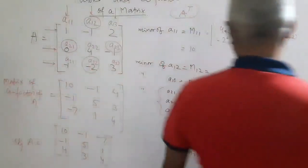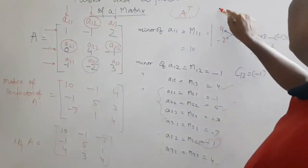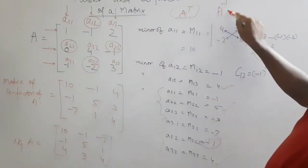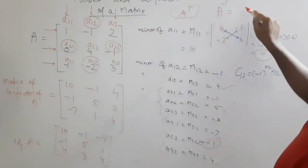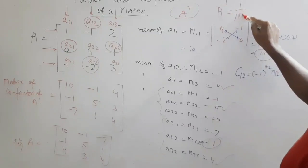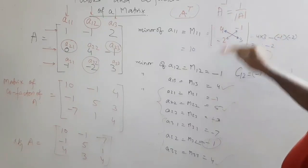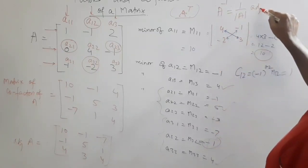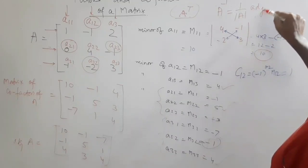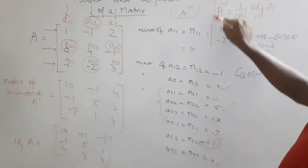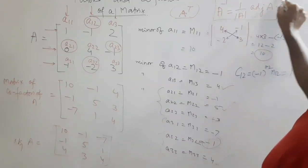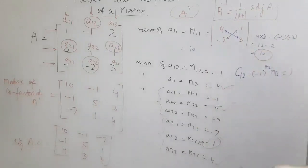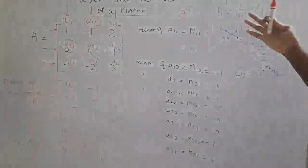And one simple thing: how to find the inverse of a matrix. A inverse equals 1 over the determinant of A, multiplied by the adjoint of A. In the next video, I will discuss the inverse of a matrix in more detail.